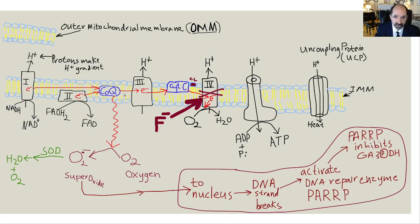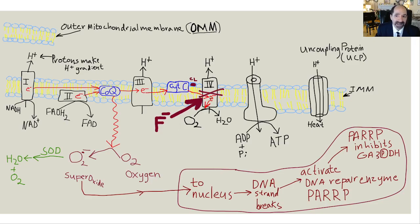Here is the electron transport chain within the mitochondria, showing the outer and inner mitochondrial membranes with transmembrane protein complexes for pumping protons: Complex 1, Complex 2 (which doesn't pump a proton but is part of Krebs cycle), coenzyme Q, Complex 3, and Complex 4 — also called cytochrome oxidase. F-minus inhibits Complex 4, and that's a big deal, because when you have inhibition of one of the complexes, you can't run any of it. You cannot convert oxygen into water and cannot generate ATP.